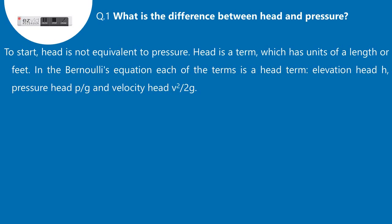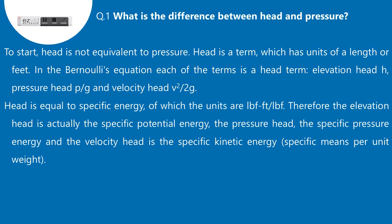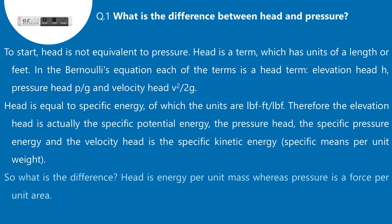Head is equal to specific energy, of which the units are lbf·ft. Therefore, the elevation head is actually the specific potential energy, the pressure head is the specific pressure energy, and the velocity head is the specific kinetic energy. Specific means per unit weight. So what is the difference? Head is energy per unit mass, whereas pressure is force per unit area.